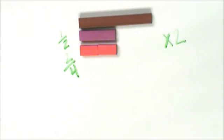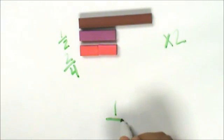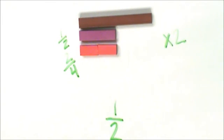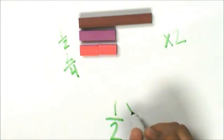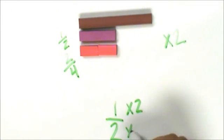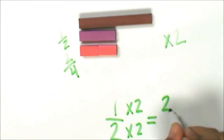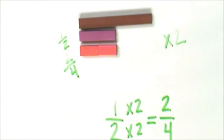I can use the identity property of multiplication to verify if my fractions are equivalent. I started off with one half, then I doubled my fraction — or multiplied by two — and it is two fourths. One half and two fourths are equivalent fractions.